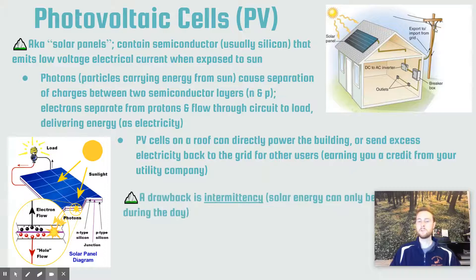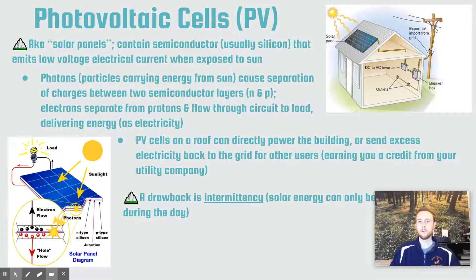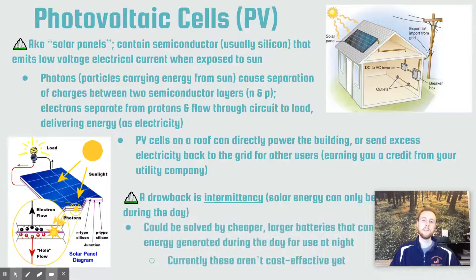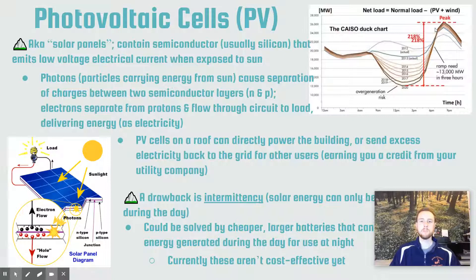A key drawback of solar we have to be aware of is intermittency — the idea that solar power is not available 24/7. Depending on the season, it gets dark for half the day or more depending on where you are on Earth, so solar panels can't always generate electricity. Another issue is that when we generate lots of electricity during the day, we don't necessarily have a way to store it and use it later at night. This presents a problem referred to as the duck curve.